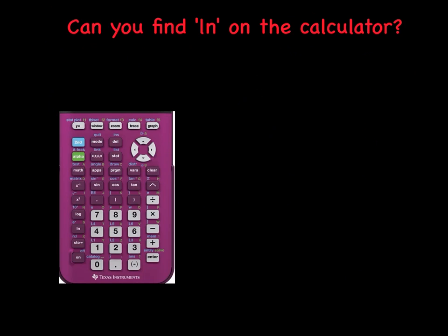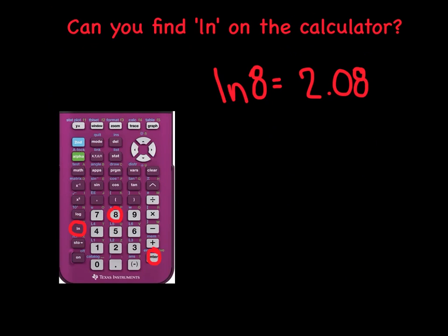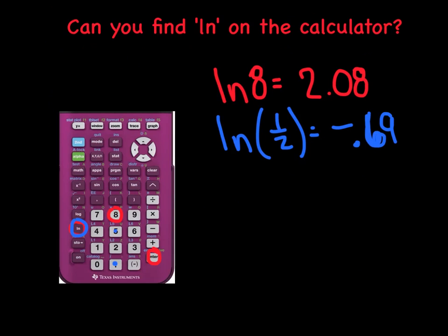We'll give a prize to the first one to find the natural log button on their calculator. Hopefully you found that rascal hiding right here on the left-hand margin — it's so special it has its own button. Let's practice: evaluate the natural log of 8. Go natural log, then 8, hit enter. I'm looking at 2.08. What we're saying in English is: what power of e is 8? In other words, e raised to the power of 2.08 equals 8. Next, the natural log of 0.5 gives negative 0.69.